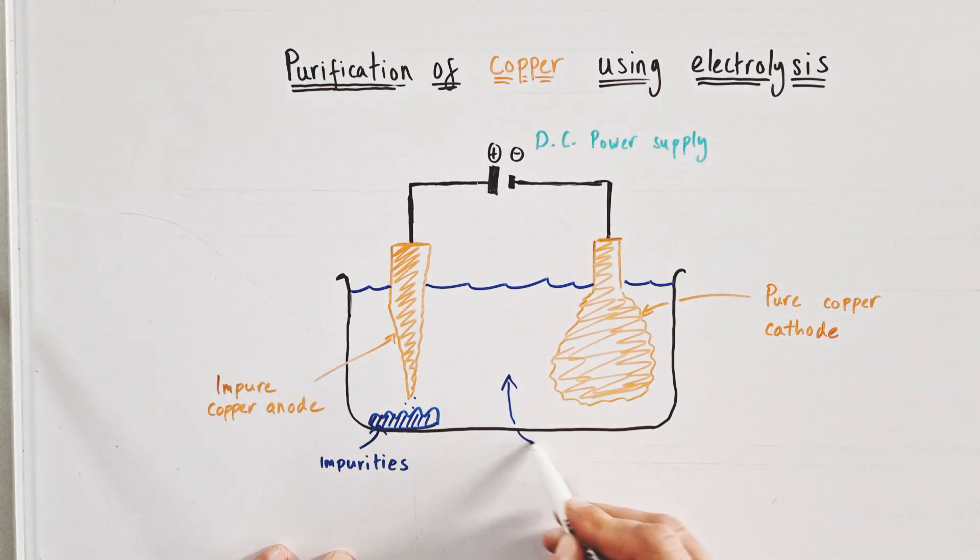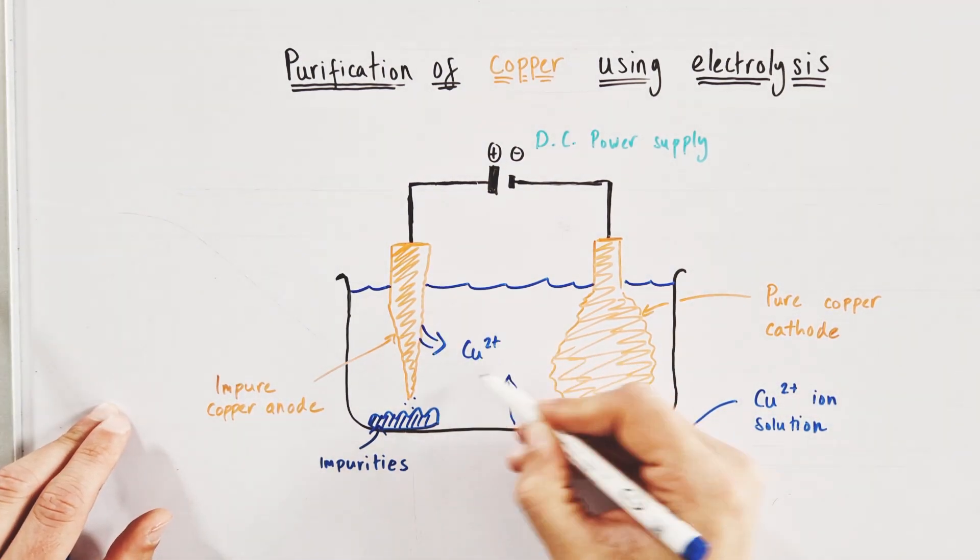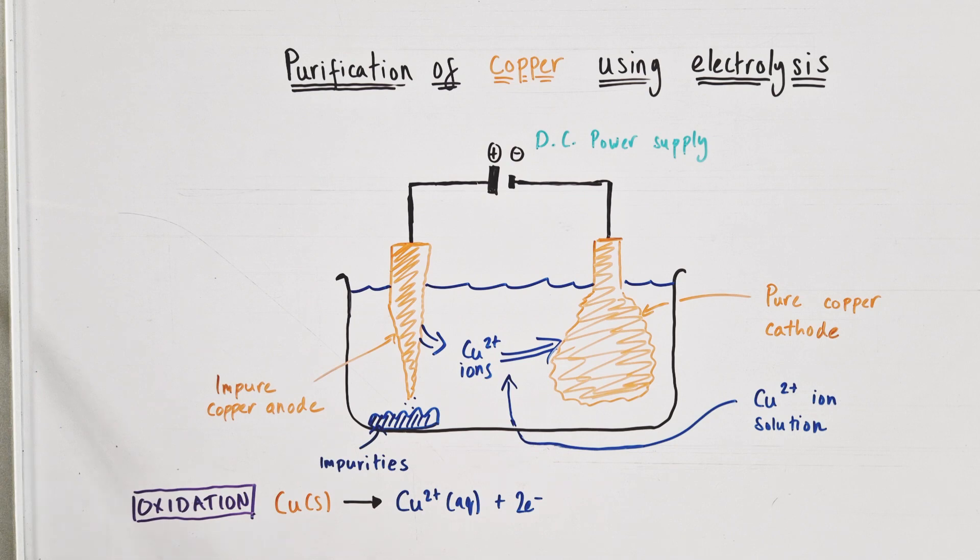The reaction taking place at the anode is known as an oxidation reaction. The copper atoms of the impure copper anode are being oxidized, losing two electrons per atom to form copper 2+ ions that are then released into the solution, as shown by the ionic half equation being drawn now. And slowly over time, the impure copper anode will diminish as those ions are formed.